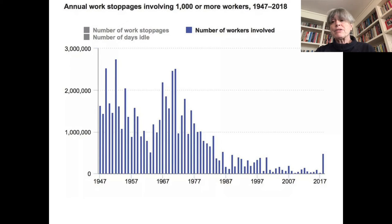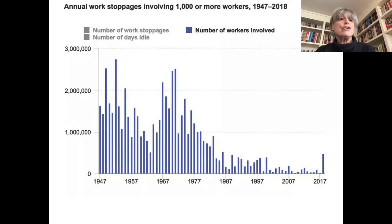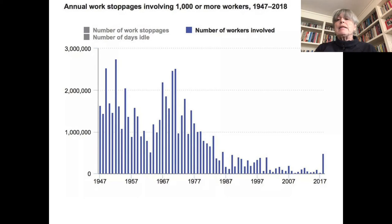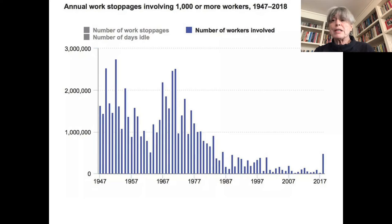There are other indicators of unions' reduced power. In some industries — for example, the auto industry or meatpacking — unions are still present, but their influence has been dramatically reduced since the 1970s. In the heyday of unionism in the immediate post-World War II period, pattern bargaining — where if one firm agreed to a certain union contract, others in the same industry would imitate that — was very common. That has completely disappeared.